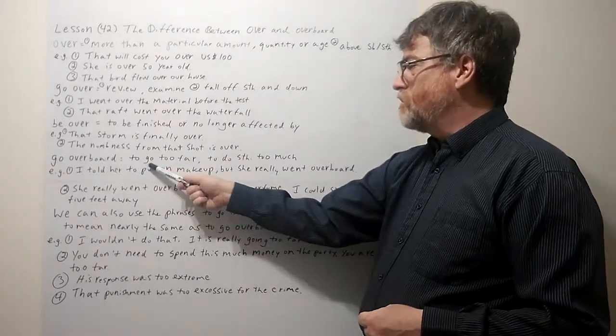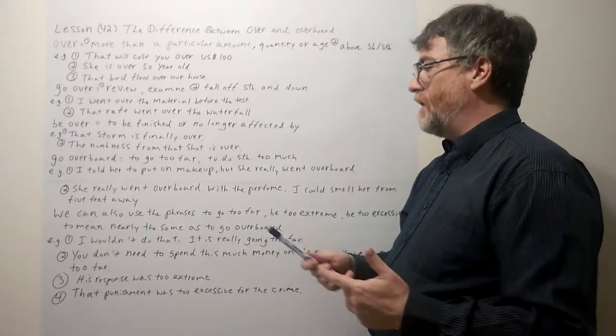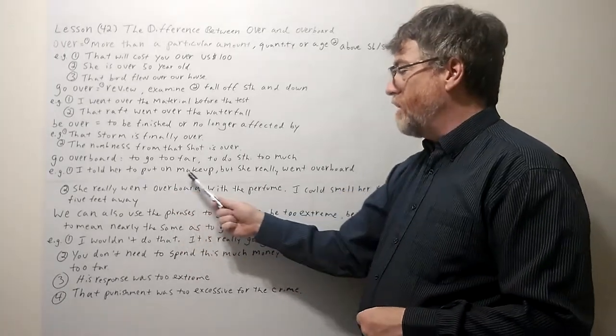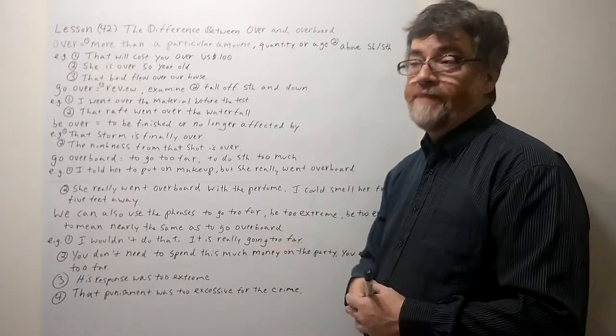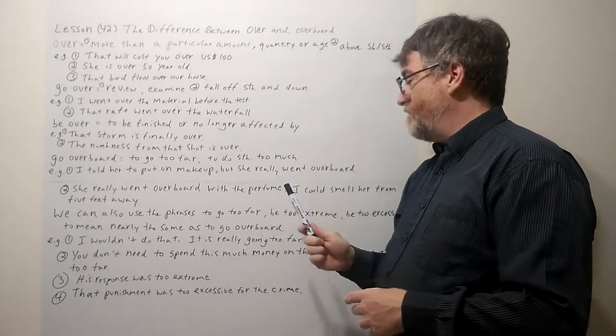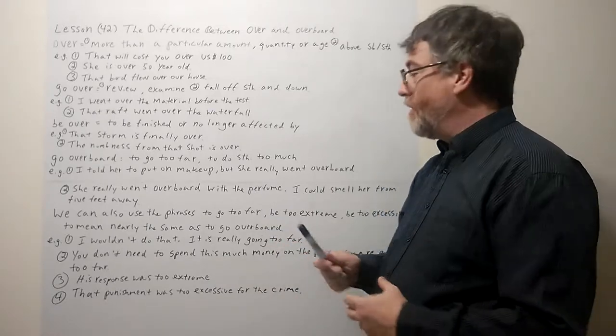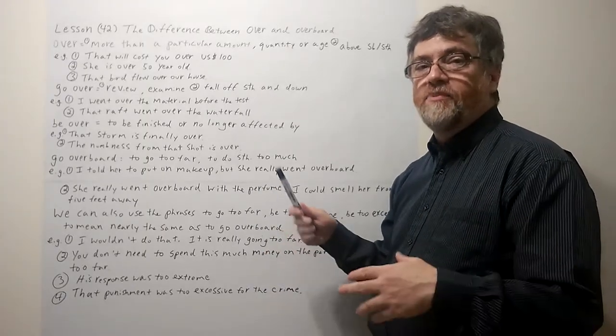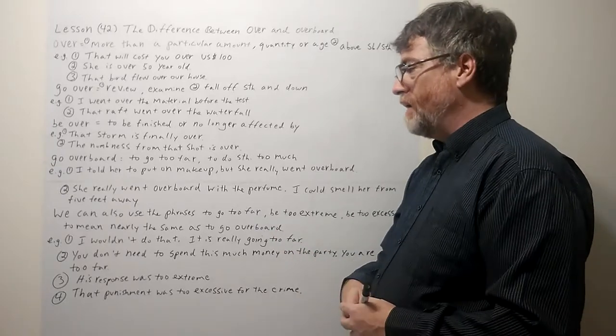To go overboard means to go too far or to do something too much. Let's look at our typical examples. I told her to put on makeup but she really went overboard. Well she put on too much makeup. Maybe she doesn't look good. Maybe she almost doesn't look like herself or maybe she looks scary. Maybe she looks like a ghost. But you put on too much makeup. It didn't look natural. It didn't end up being an improvement because you went too far. You went overboard.